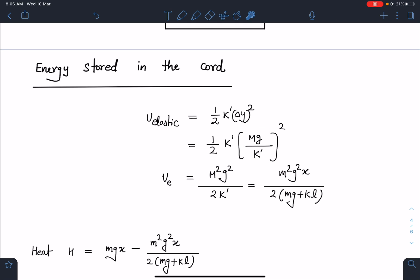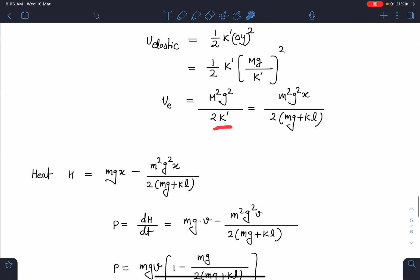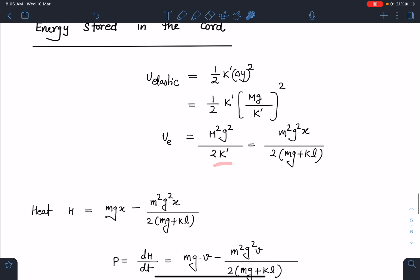When I substitute the value of k dash which is (mg plus kl) by x, this expression becomes m squared g squared x by 2(mg plus kl). Now I can write the expression for heat: it is mgx minus m squared g squared x by 2 times (mg plus kl).